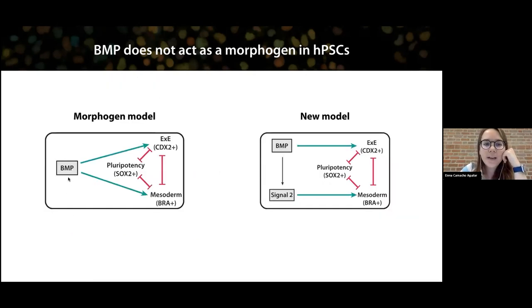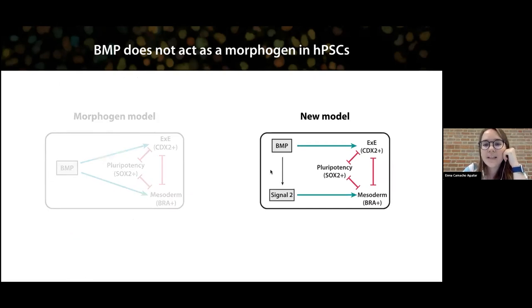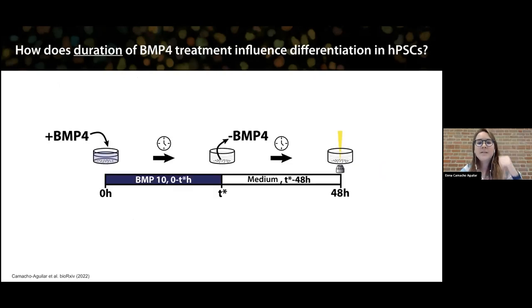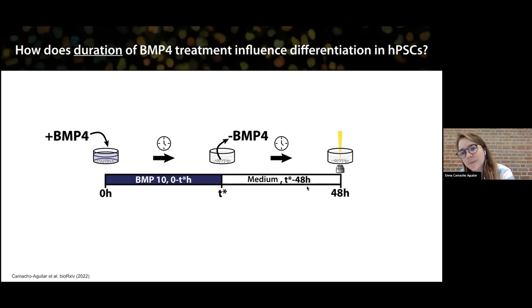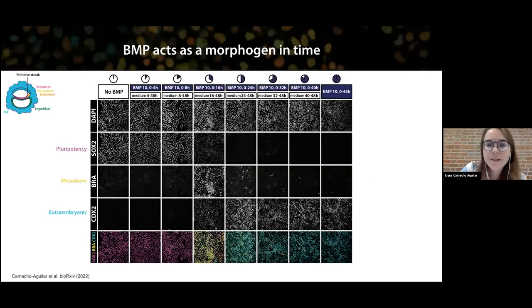So the model where BMP alone is able to induce differentiation to three fates is actually not true — BMP needs secondary signals to induce mesoderm fates. My question was how to build this model and understand how cells are combinatorially interpreting these two signals. Since development is highly dynamic, we presumed that not only concentration but also time was important in this process. So we exposed human pluripotent stem cells to different durations of BMP signaling, after which we removed BMP and looked at what the cells became after two days — and we were surprised to observe morphogen-like effects in time.